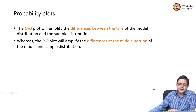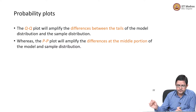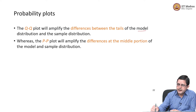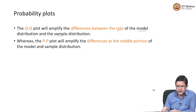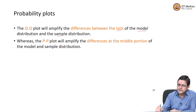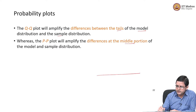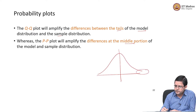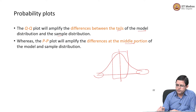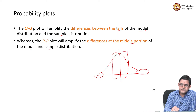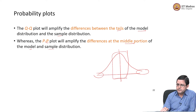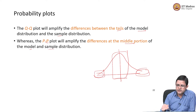Generally, the q-q plot will identify differences between the tails of the distribution. If the fitted distribution and the sample distributions are different in their tails, that will get highlighted in the q-q plots. And if the difference in the distribution is mainly in the middle portion — for a normal distribution, the tails are the extremes and the middle is the central portion — that gets highlighted in the p-p plot. Therefore, we look at both plots.